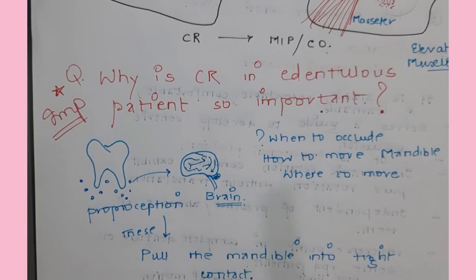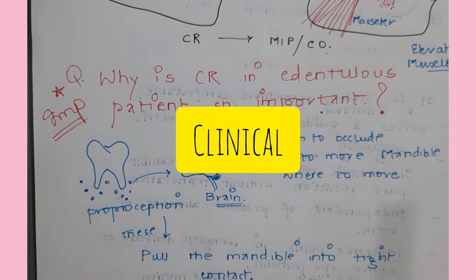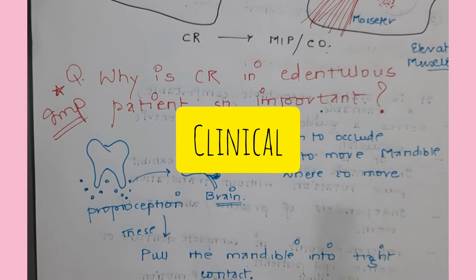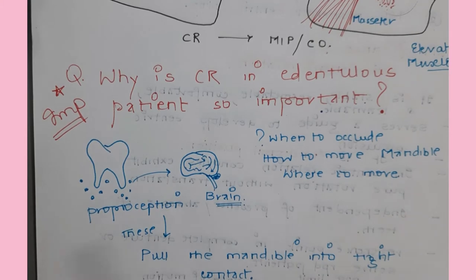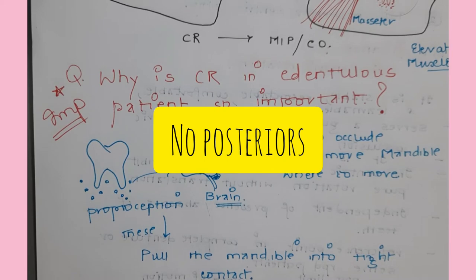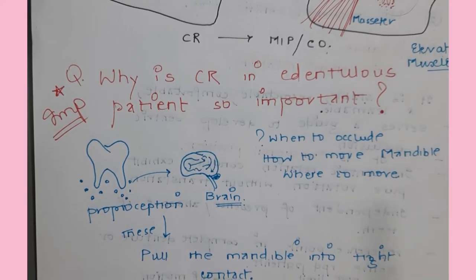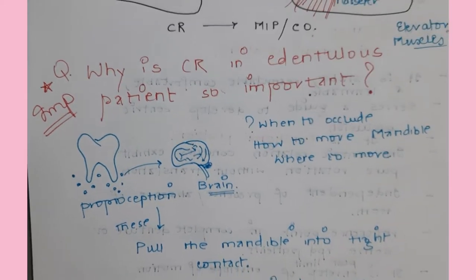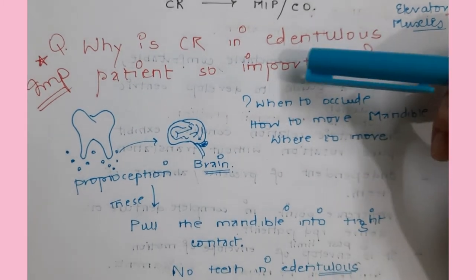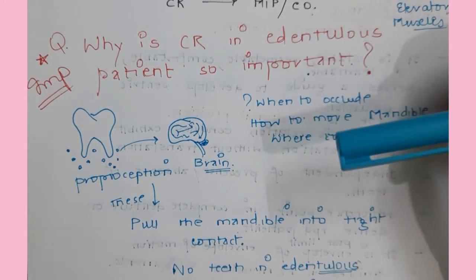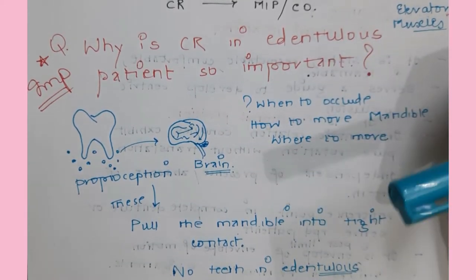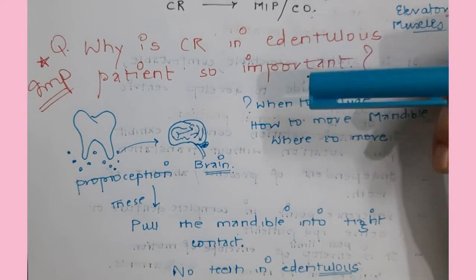Usually in RPD cases when only a few teeth are missing, we take an alginate impression, pour the cast, mount it on the articulator, and set teeth. But in an RPD case where maximum teeth are missing - only a few anteriors and one premolar present - we perform a centric relation record. So centric relation is not used only in complete denture cases, but also in full mouth rehabilitation or RPD cases where multiple teeth are missing.